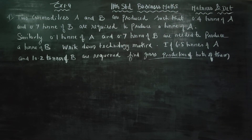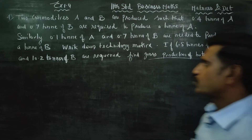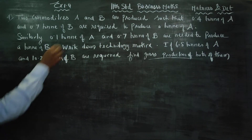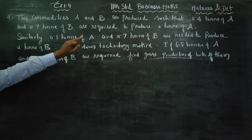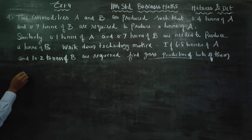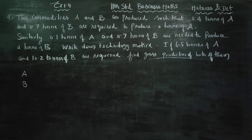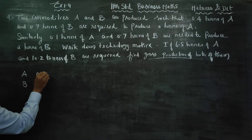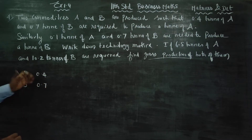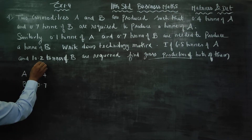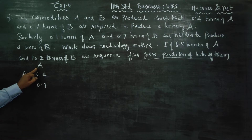Dear 11th Standard Business Maths students, in exercise number 1.4, two commodities A and B are produced such that 0.4 tenths of A and 0.7 tenths of B are required to produce a tenth of A. If A and B are required to produce a commodity, then A commodity is 0.4 tenths and B commodity is 0.7 tenths of A commodity.